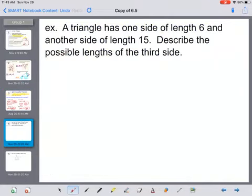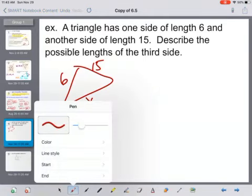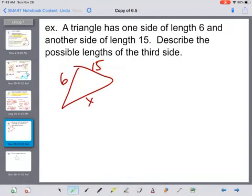We could look at that with inequalities as well. So a triangle has one side of 6 and another side of 15. Describe the possible lengths of the third side. So we have 6, 15, and x. And so what we really have to do is set up all three of the possibilities in this case, because we don't know which one is the biggest or the smallest.